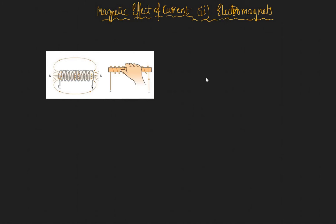We saw that if we have a solenoid — which is a coil that carries current — it produces a magnetic field. The direction of these magnetic field lines can be easily determined using your right hand. If you curl your fingers in the direction of the current, then your thumb points in the direction of the magnetic field.